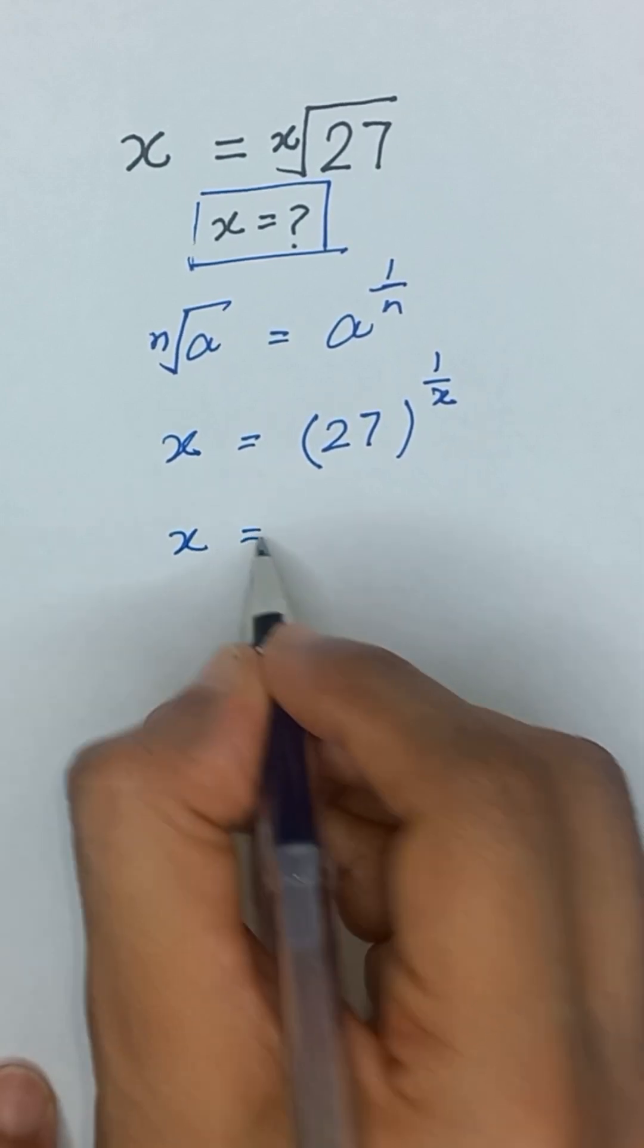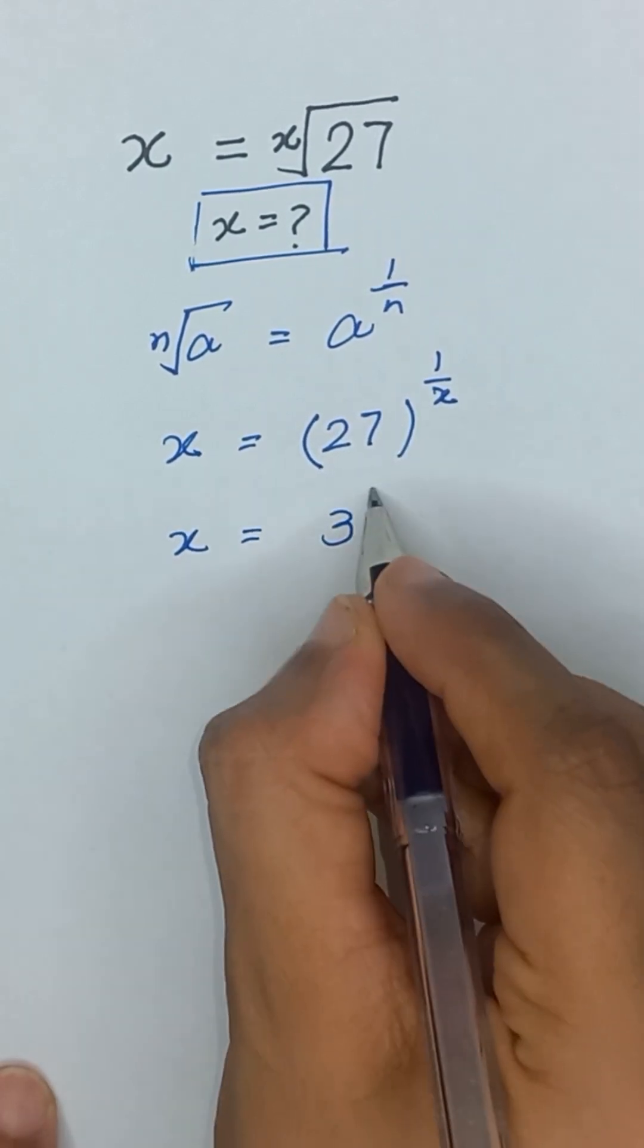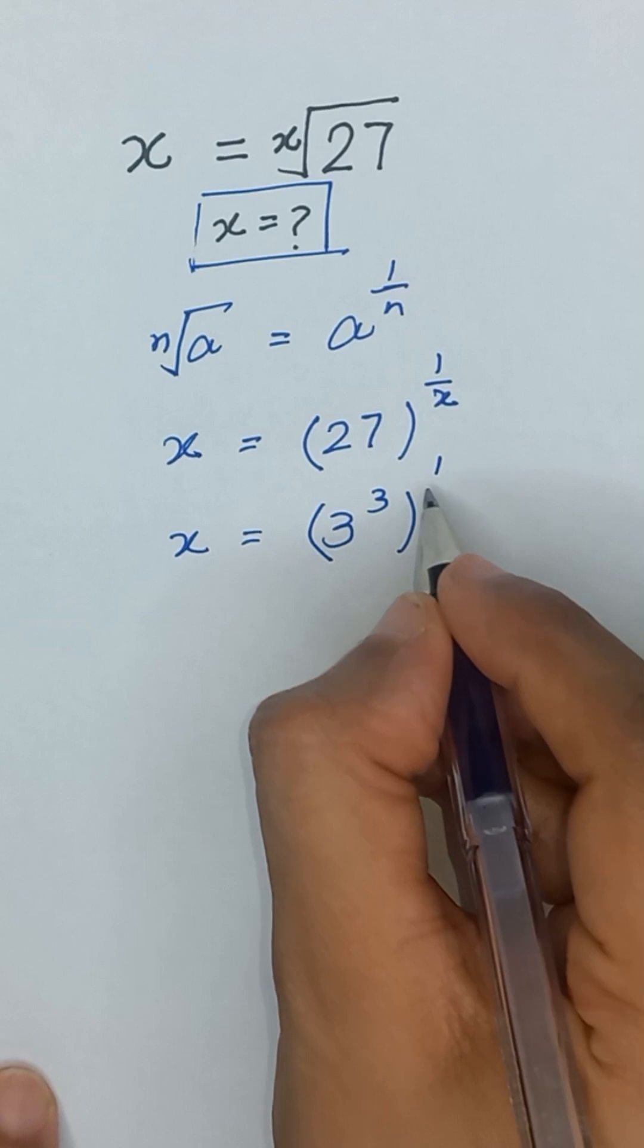x is equal to 27 can be written as 3 to the power 3 and its whole power 1 divided by x.